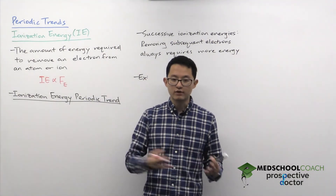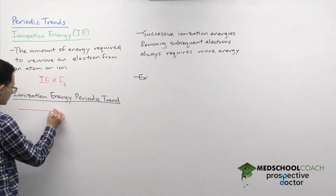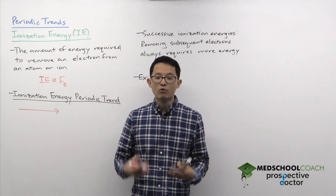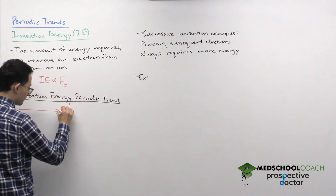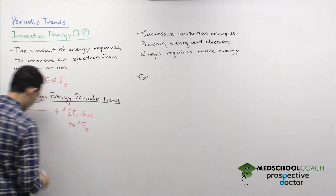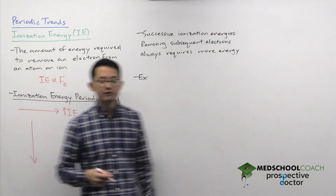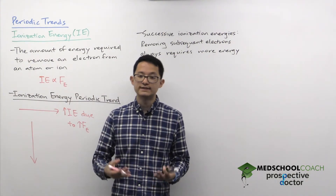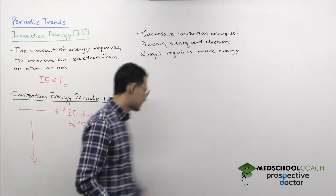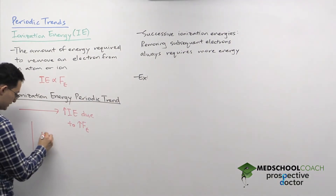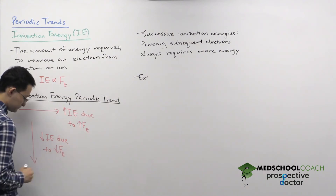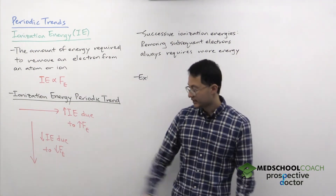As you go from left to right across the periodic table, the electrostatic force increases. Since the nucleus is holding on to its valence electrons more tightly, we need more energy to remove electrons, so there is an increase in ionization energy going left to right. When we go down a column, the electrostatic force decreases, the nucleus holds valence electrons less tightly, so less energy is required — giving a decrease in ionization energy.